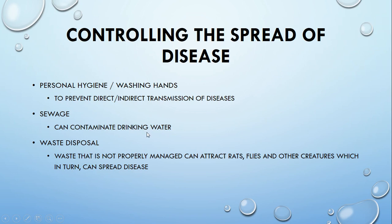Finally, controlling the spread of disease. Personal hygiene and washing hands are very important as they aim to prevent direct and indirect transmission of diseases. Sewage management is critical because if not properly handled it can contaminate our drinking water, which is another source of disease spread. Waste disposal, if not done properly, can attract rats, flies, and other creatures which in turn can spread certain diseases.